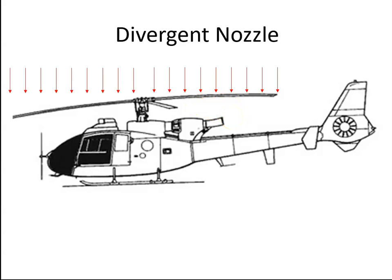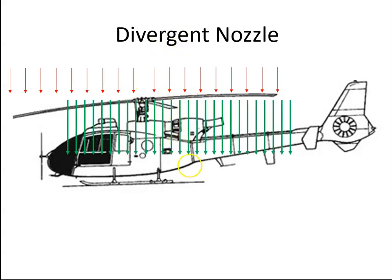For divergent nozzles, we can examine a helicopter — take this Gazelle helicopter for example. A helicopter creates lift as the rotor blades rotate, taking air in from above and accelerating it downward. If we had a convergent type nozzle, the air would come out of the exhaust and impact on the air coming down through the blades. It would also create some thrust due to this airflow, making it more difficult to maintain the helicopter in a hover position.